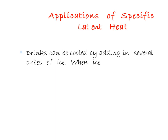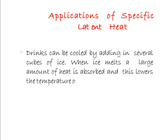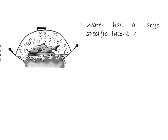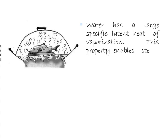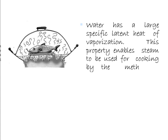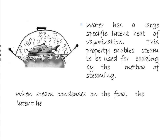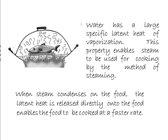Applications of latent heat: drinks can be cooled by adding several cubes of ice. When ice melts, a large amount of heat is absorbed, thus lowering the temperature of your drink. Water has a large specific latent heat of vaporization. This property enables steam to be used for cooking by steaming. When steam condenses on food, the latent heat is released directly onto the food, enabling the food to be cooked at a faster rate due to heat penetration.